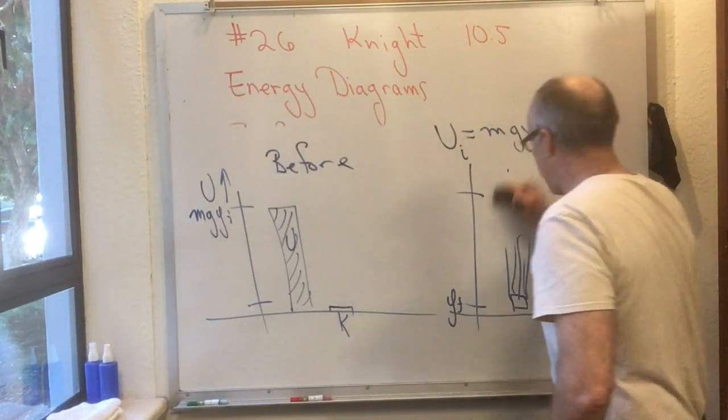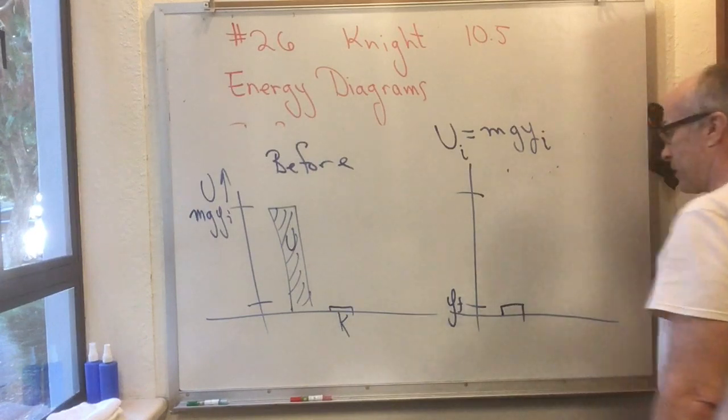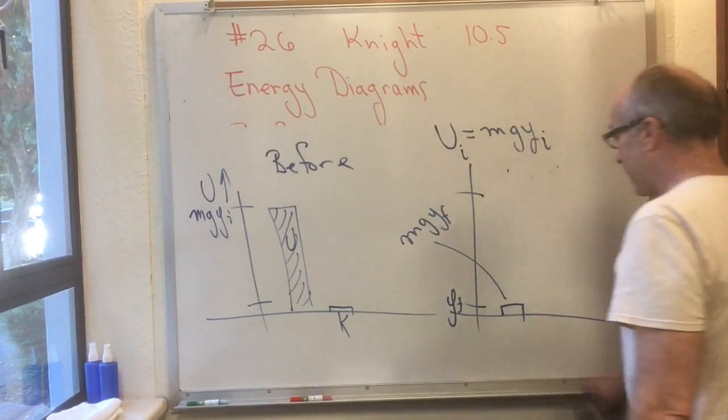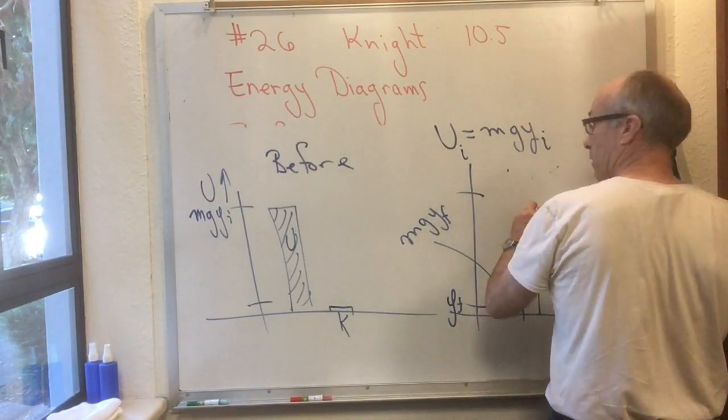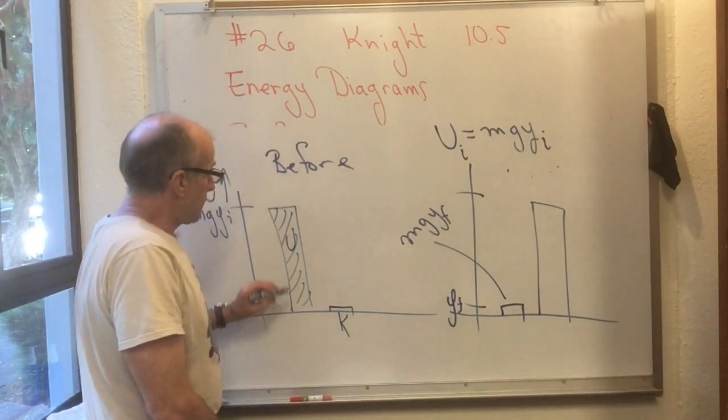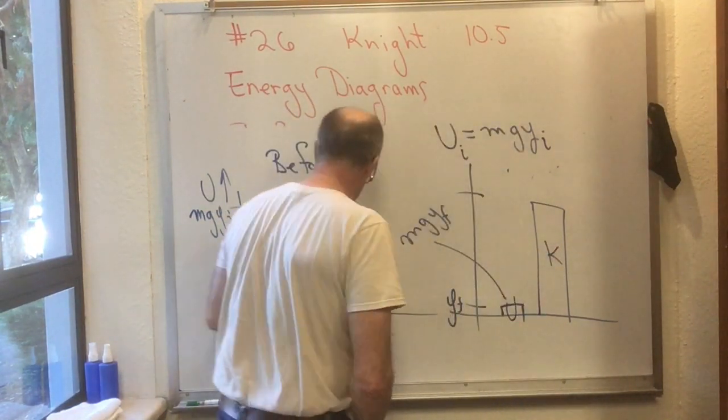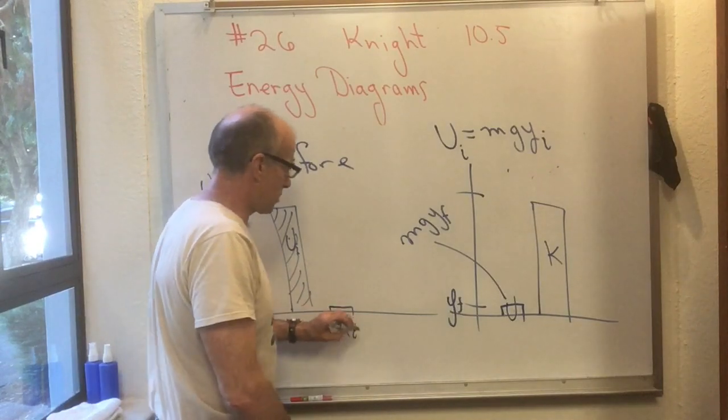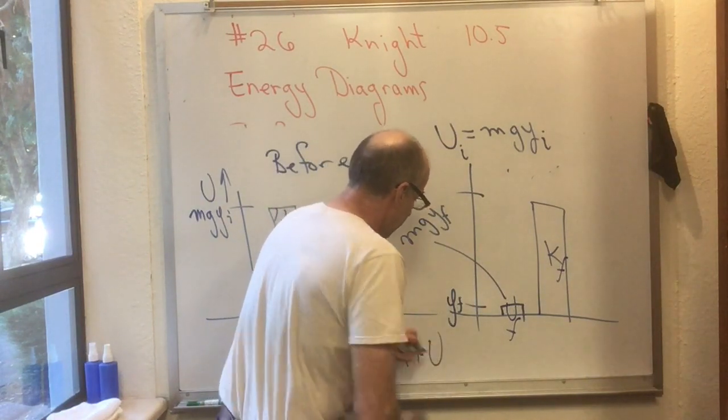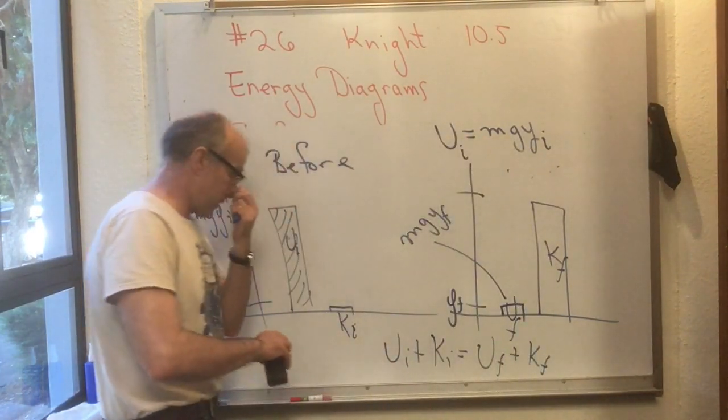And now the corresponding after diagram here, the potential energy has greatly dropped. Now the potential energy here is just mgy final. And the kinetic energy has gotten big. But there's this thing that we know and the thing that we know is that u plus k in the before situation is equal to u plus k in the after situation. So that's our conservation of energy equation.